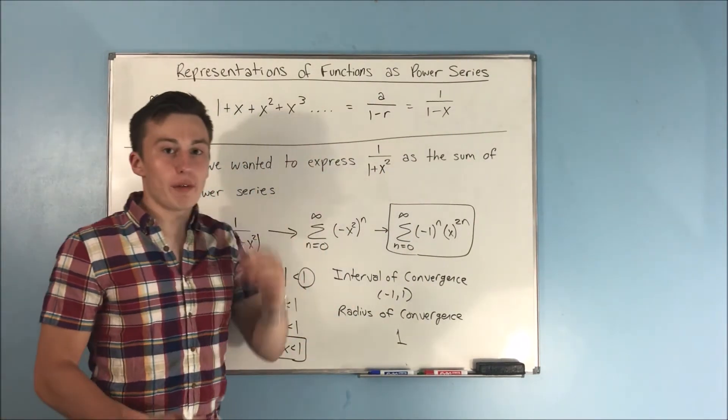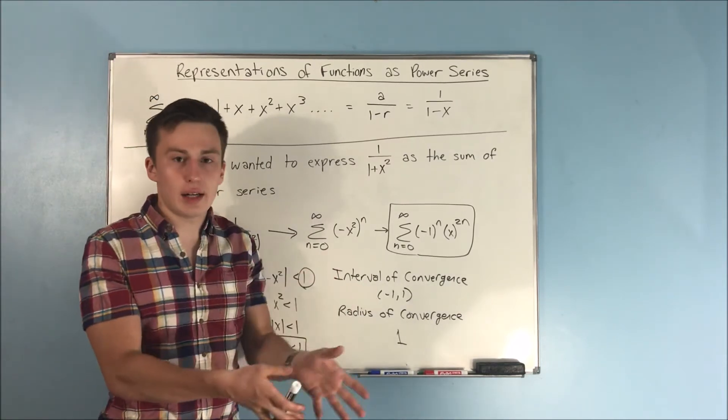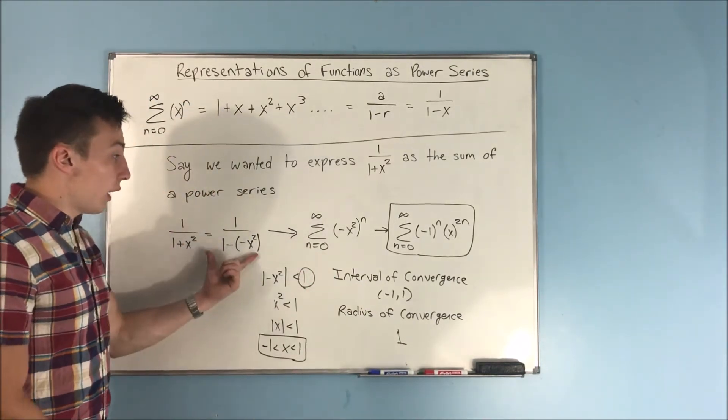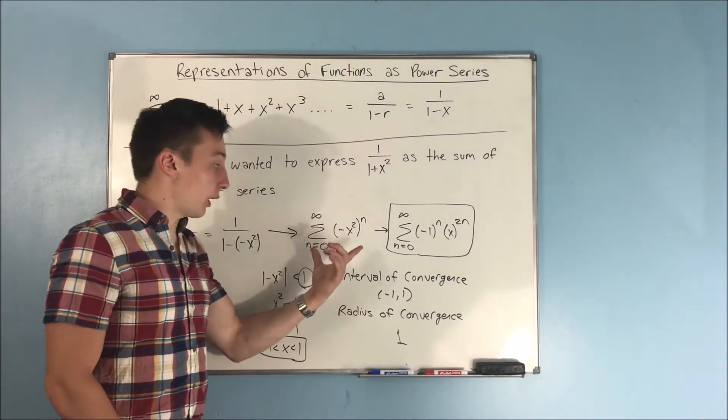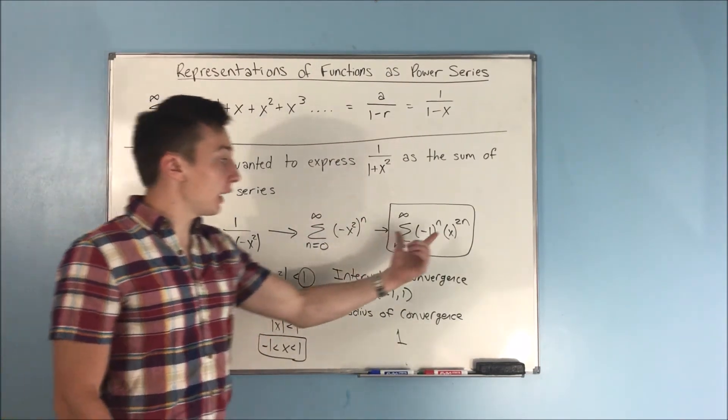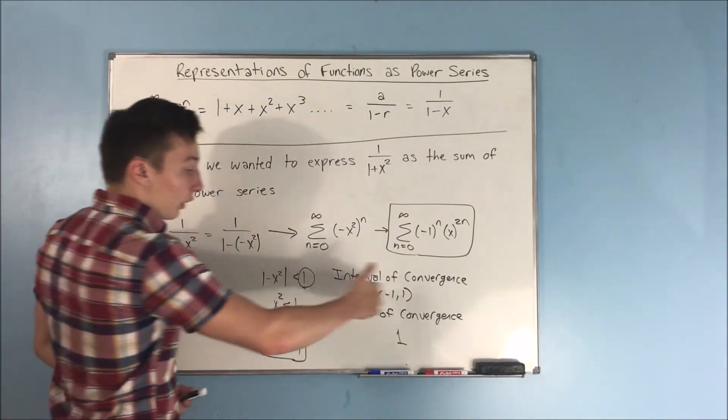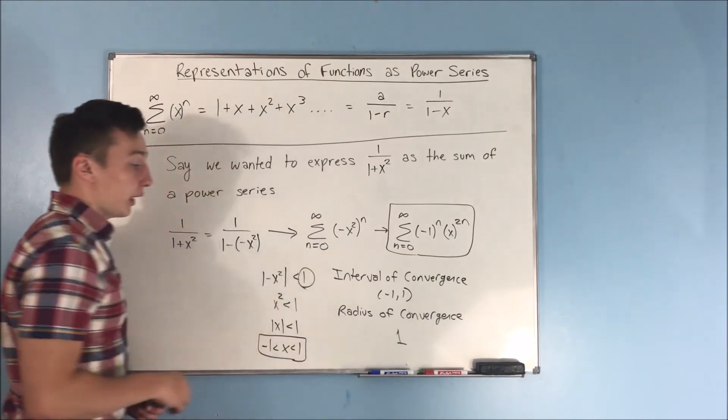You could write 1 over 1 minus u if it helps you not get confused with the variables and all that, having an x and an x, whatever. So then we made it that power series. We got that negative x squared to the nth power. You can break it up if you'd like, that's fine. And we found our interval of convergence and our radius of convergence.